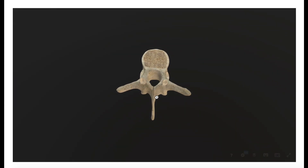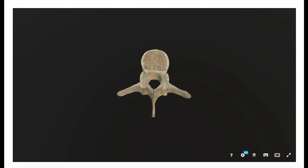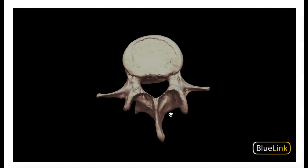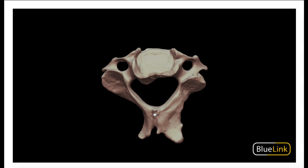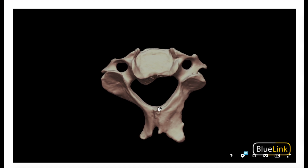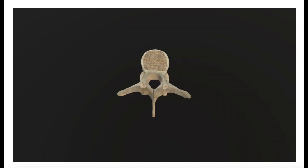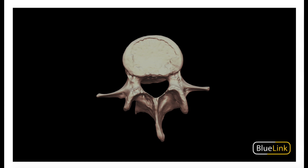The thoracic spinous process and the lumbar spinous process are pretty much just one bony process. When we compare that to the cervical vertebra, the cervical vertebra has bifid spinous processes — that's the tendency. The spinous process actually has one branch going in one direction and one branch going the other direction. The cervical vertebra are going to have bifid spinous processes; we don't see that in the thoracic or lumbar vertebra.